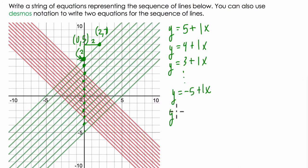On Desmos, I can also write this. Use square brackets going from 5 dot dot dot to negative 5 plus 1x. This gives me all of the lines that we include here in this list. It includes all the lines with a slope of 1, and with y-intercepts from 5 to negative 5.